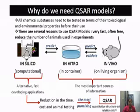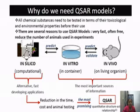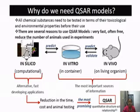Why do we need a QSAR model? All chemical substances need to be tested in terms of their toxicological and environmental properties before their use. Otherwise, they will cause environmental pollution or toxicity in human beings and animals, and will disturb the whole ecosystem.